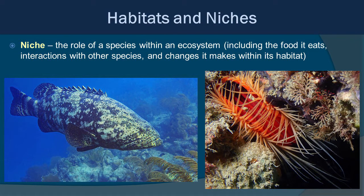Within these habitats, different organisms have a niche. A niche is the role of a species within an ecosystem — this includes the food it eats, its interactions with other species, and changes it makes within its habitat. For example, the goliath grouper on the left is a predator, and it helps maintain population levels so other species have food. On the right is a flame scallop, a bivalve that filter feeds — it attaches to rocks and processes water, eating plankton. So it's interacting in a lot of ways and is quite active within its niche.